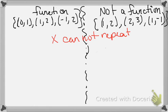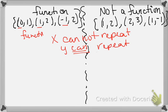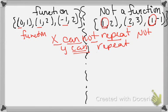X cannot repeat — y can, but not x. So let's look at the one on the left. We're just looking at the x values: there's a zero, a one, and another one — wait, no x repeats, so this is a function. If we look at the other one, we've got one, two, and another one — see how the ones repeat in the x value. Since x cannot repeat, this is not a function.